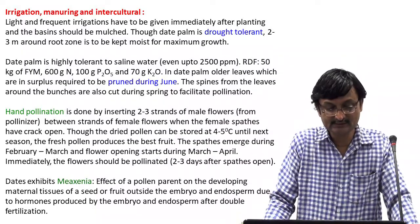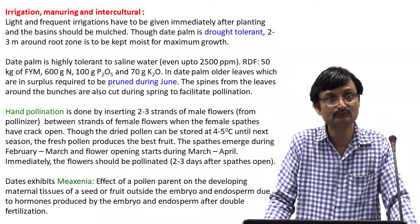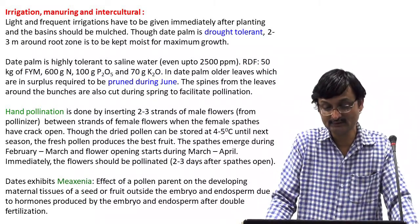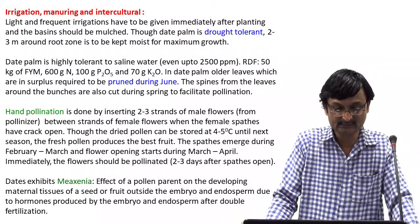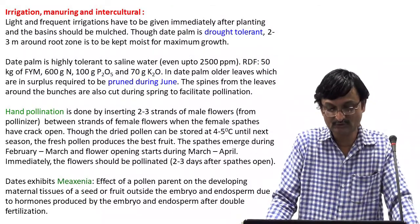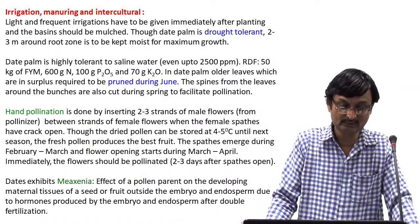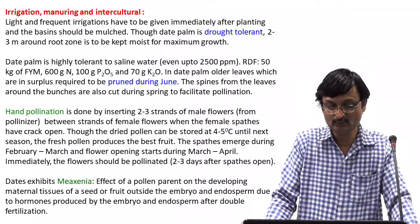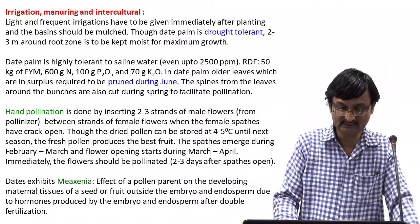Date palm exhibits Metaxenia. Metaxenia is the effect of pollen parent on the developing maternal tissues of a seed or fruit outside the embryo and endosperm, due to hormones produced by the embryo and endosperm after double fertilization.